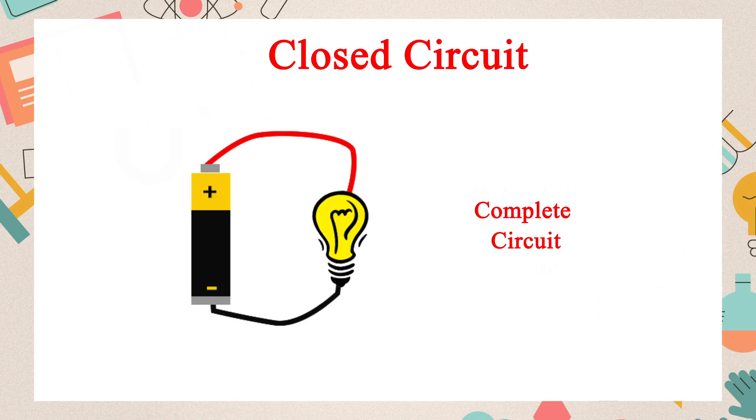In a closed circuit, the electric current passes from one terminal of the cell to the negative terminal of the cell.